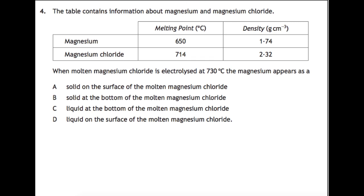Here we have a problem solving question looking at electrolysis of magnesium chloride. We have magnesium chloride which we are electrolyzing at 730 degrees. That means magnesium chloride will be a liquid and when we electrolyze it we are turning that into magnesium and chlorine. Magnesium has a melting point of 650 degrees so at 730 degrees magnesium will be a liquid and it is less dense than magnesium chloride so it will be on the top. Our answer here will be D, a liquid on the surface of molten magnesium chloride.